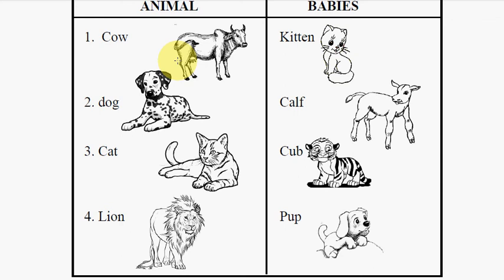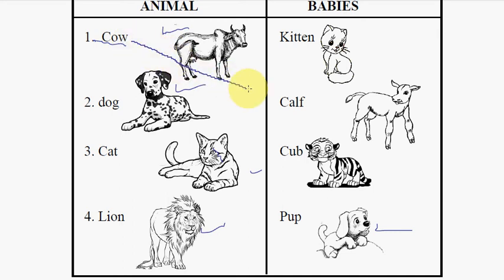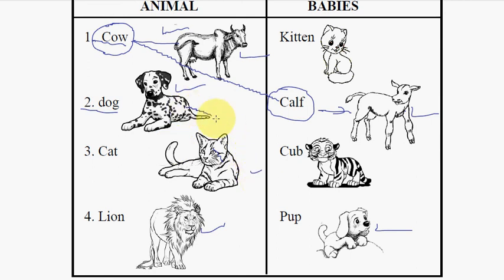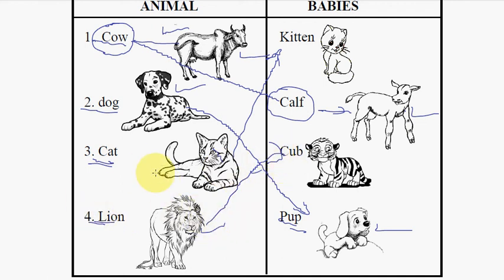The third section is match the following. Here some animals and their babies are listed. Because this worksheet has been created for Class 1 students, I have included figures of animals along with the words so that students can easily match the columns. For example, cow — the baby of a cow is a calf, so the student will connect them. In the same way, the baby of a dog is known as a puppy or pup, the baby of a cat is a kitten, and the baby of a lion is a cub. Students may identify using words as well as figures, which will be helpful for all students.